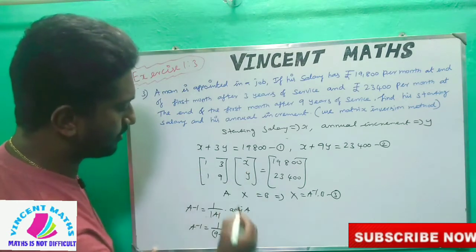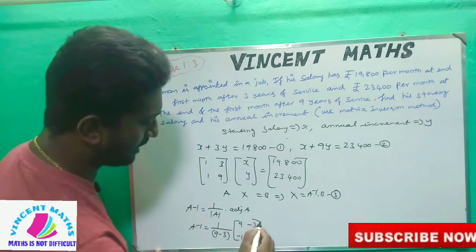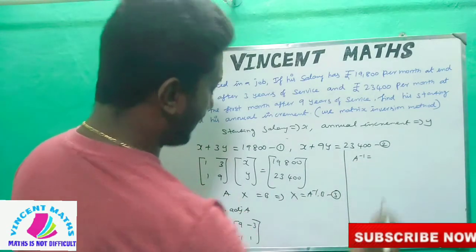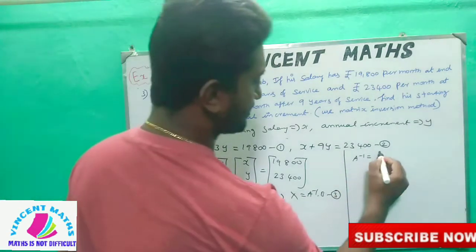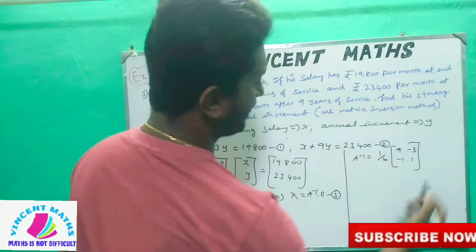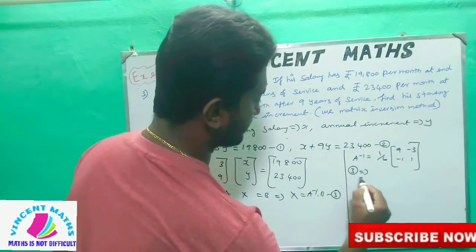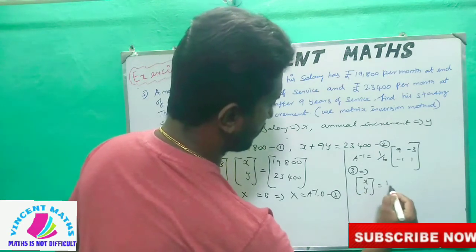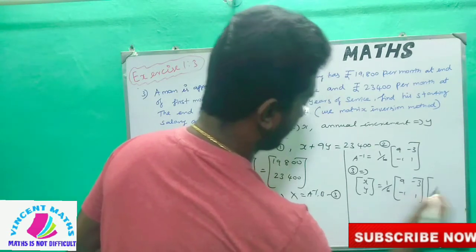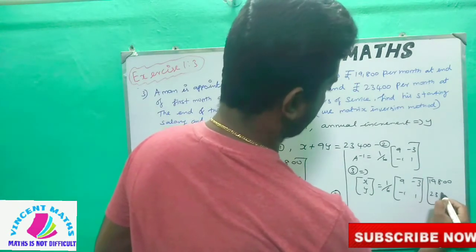Here is matrix A. We exchange the diagonal elements: 1 and 9, and negate the off-diagonal: 1 and minus 1, then 3. The adjoint of A gives A-inverse value as 1/6 times the matrix [9, -3; -1, 1]. B values are 19,800 and 23,400.